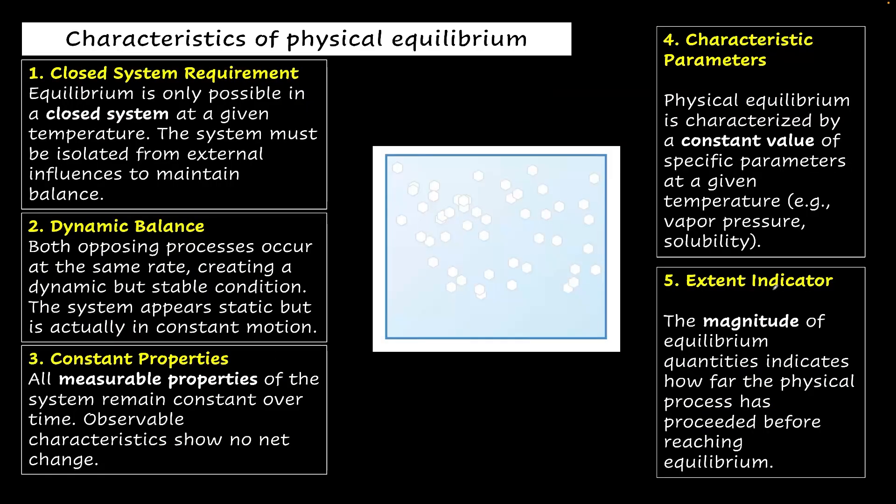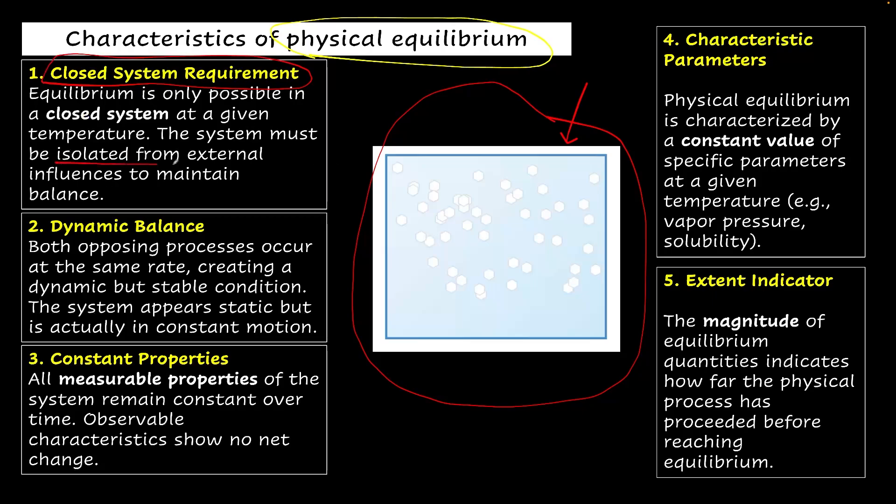So overall, in physical equilibrium, we've observed five characteristics that we can summarize. If we take any physical equilibrium example, like the one of sugar solution, we see that the first requirement is that we need a closed system. There should not be any external influence on the system and the system should be completely isolated from external influences to maintain the equilibrium. And all this we're talking about is when the equilibrium is achieved. When the equilibrium is achieved, first, you need to have a closed system to maintain it.